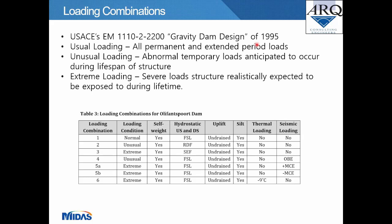Loading combinations were defined according to the USACE Engineering Manual — Gravity Dam Design of 1995. Normal loading includes all permanent and extended period loads. Unusual loading comprises normally abnormal temporary loads anticipated during the structure's lifespan. Extreme loading refers to severe loads the structure is realistically expected to experience. Table 3 lists loading combinations 1 to 5A, 5B, and 6, comprising hydrostatic, gravity, uplift, temperature, silt, and seismic loading.